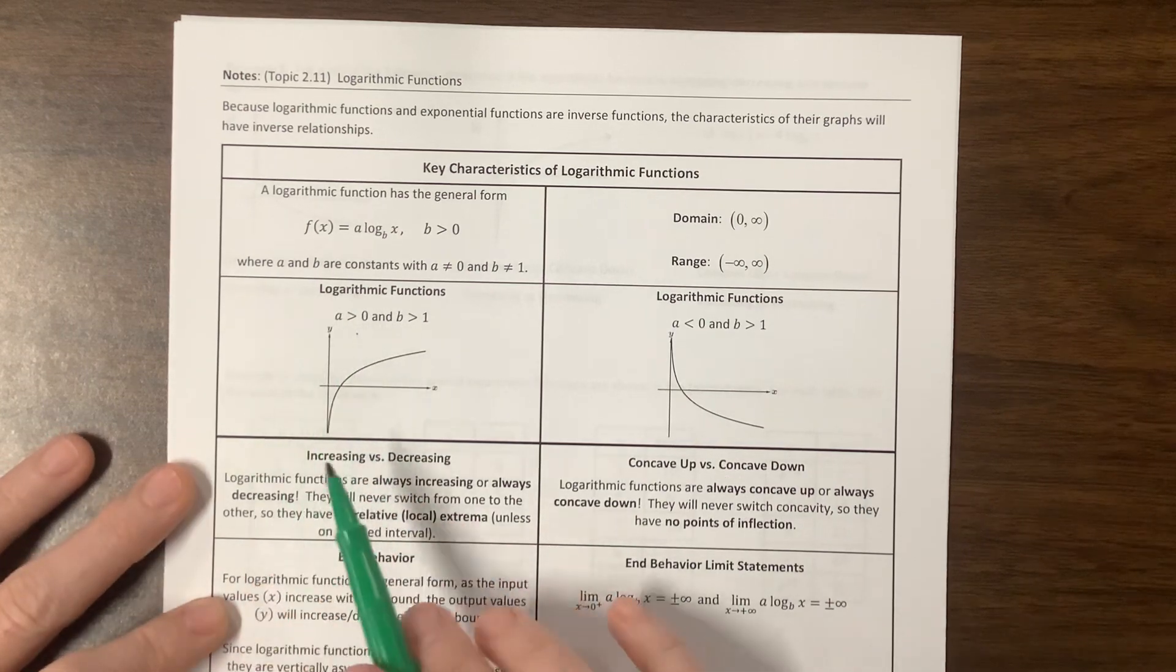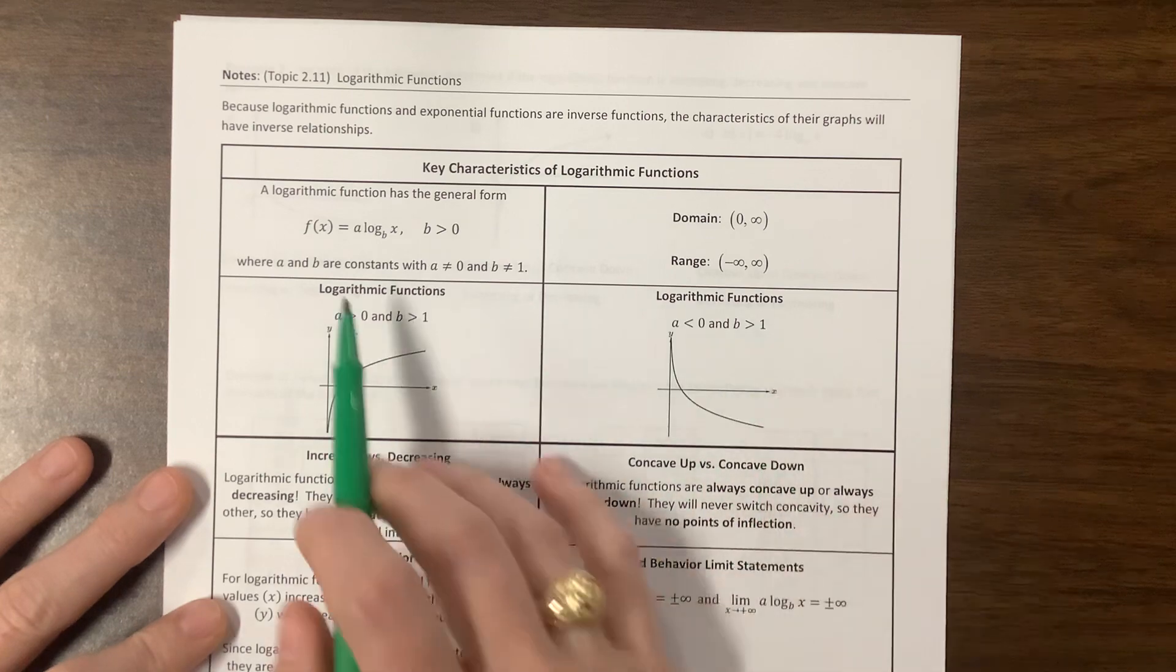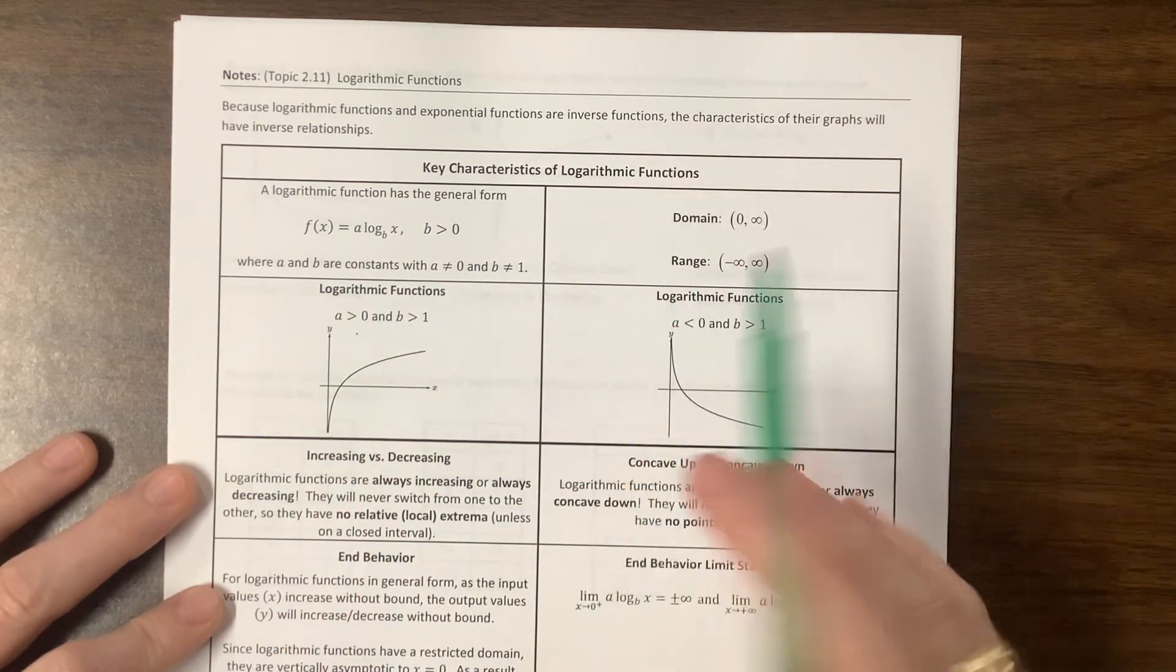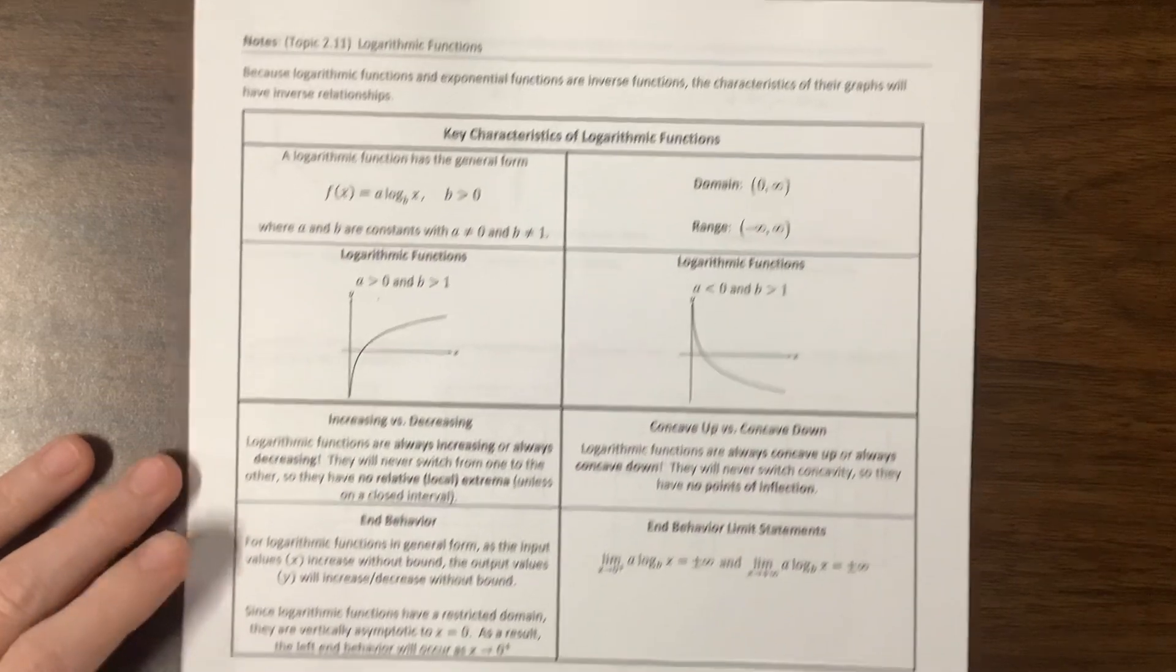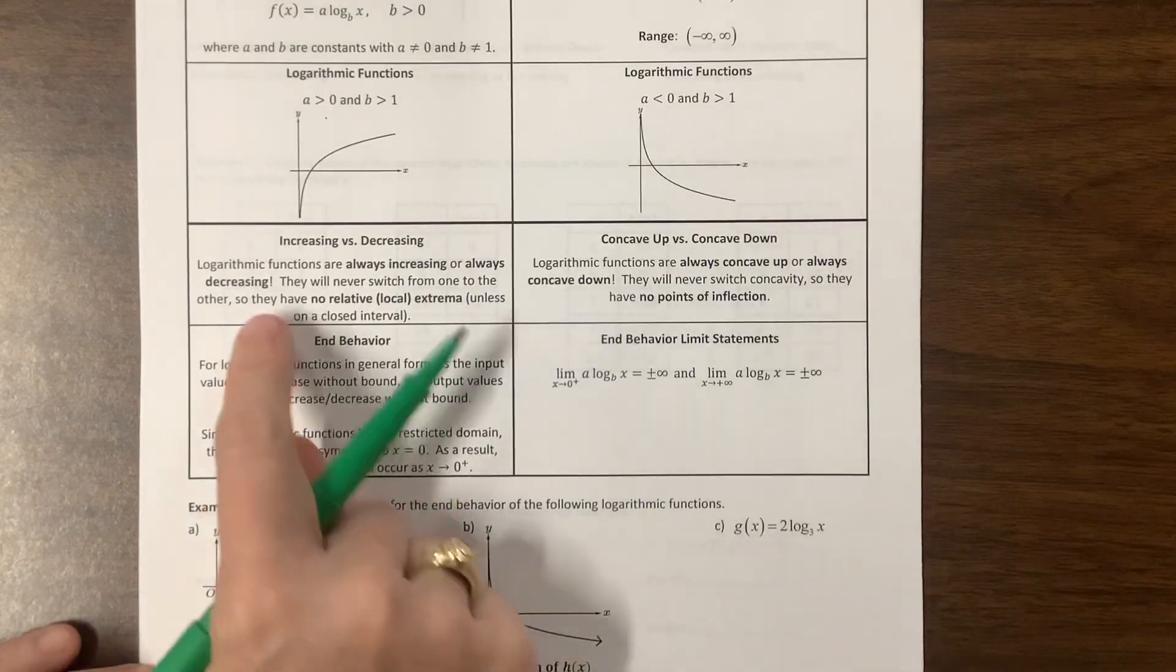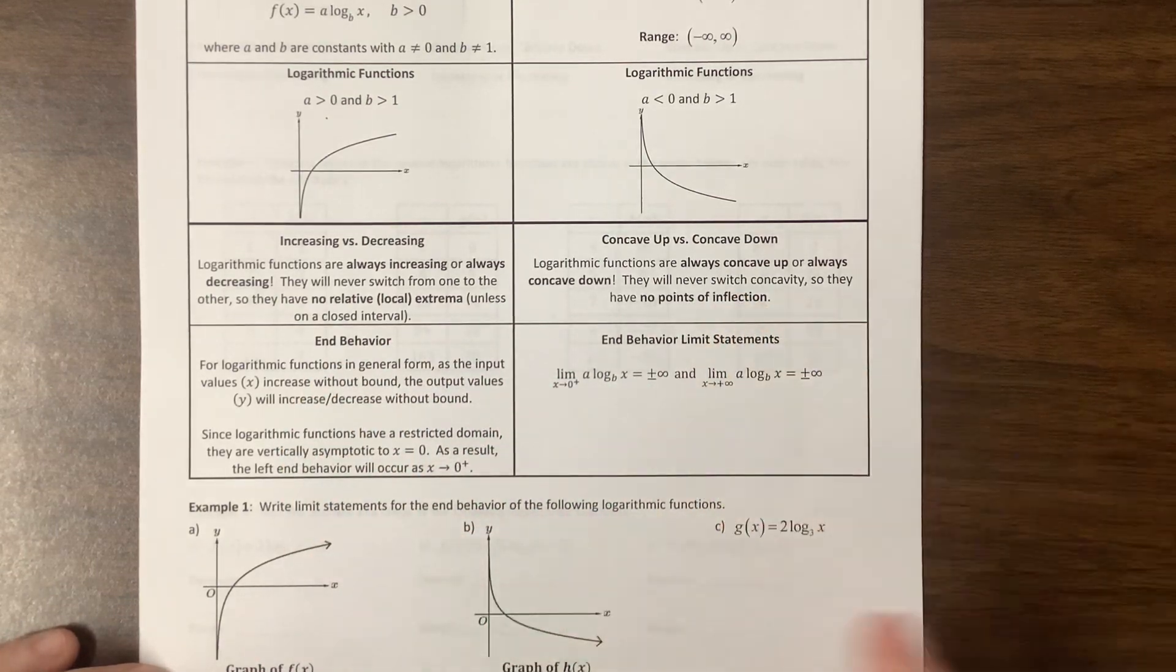If A is positive, then it's going to kind of increase a little bit. But if A is negative, then what we've done is we've reflected it over the x-axis, and so it's going to do something like that. Just like exponential functions, they're always increasing or always decreasing. They're always concave up or concave down.